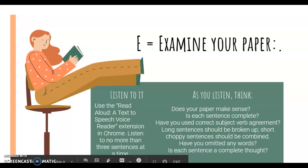Next, we have E. Examine your paper. Listen to it. So use the Read Aloud, a text-to-speech voice reader extension in Chrome. Listen to your paper no more than three sentences at a time. This way you can hear each sentence as it comes and you can make corrections as you go. It's best to have the computer read it to you or somebody else read it to you because if you read your own paper, you're going to say what you want it to say.